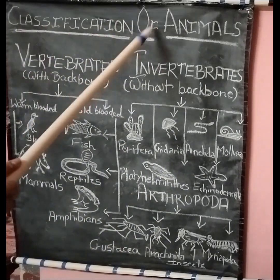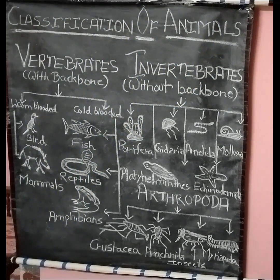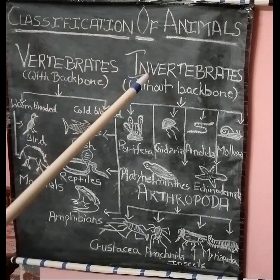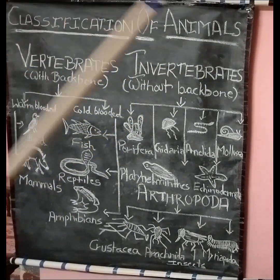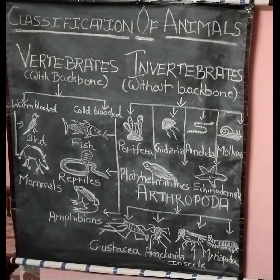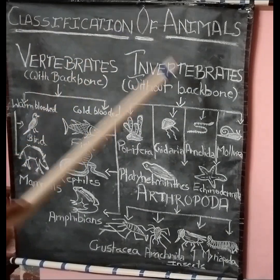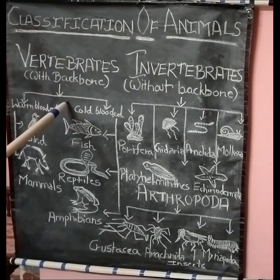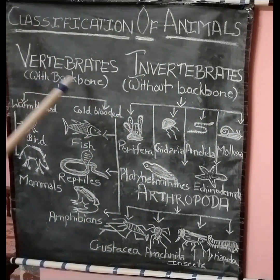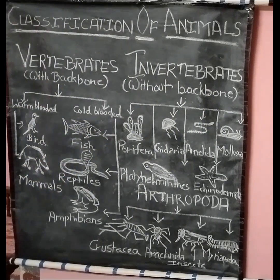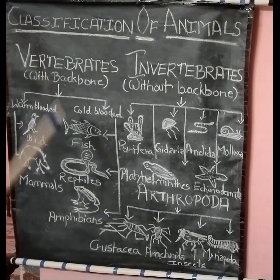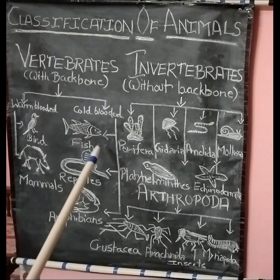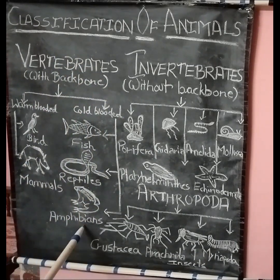As you can see, this board clearly represents the classification of animals. Without wasting time, let us start. Classification of animals includes vertebrates and invertebrates. Vertebrates are animals with a backbone, and invertebrates are without a backbone. Vertebrates are divided into warm-blooded and cold-blooded. Warm-blooded include birds and mammals, whereas cold-blooded include fish, reptiles, and amphibians.